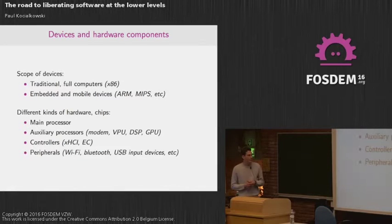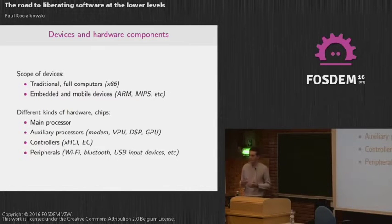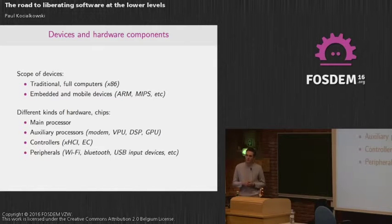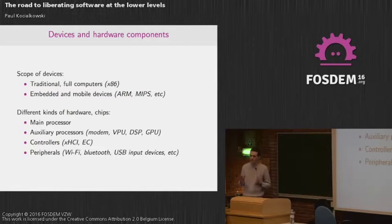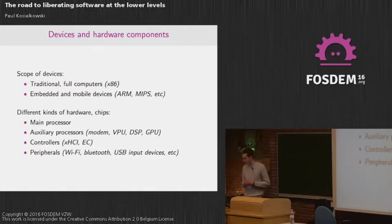On those devices you find different kinds of chips. You have the main processor that is always there, and then you have some auxiliary processors. On mobile phones you would find a modem that is in charge of communicating with the telephony network, but you also have a bunch of other processors around it, like the VPU that will accelerate video decoding, the DSP that will do some other signal treatment, and the GPU of course for graphics.